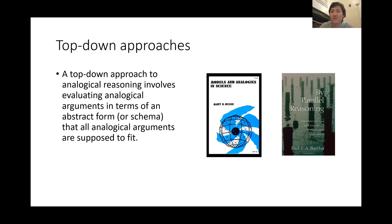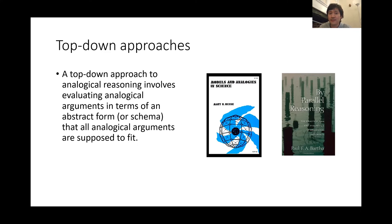Let's start with some traditional philosophical approaches. As mentioned, most philosophical examinations of analogical reasoning start from Mary Hesse's 1963 book, Models and Analogies. Since then, philosophers have returned from time to time to the notion of analogy and analogical reasoning. I found most of them, if not all, can be classified as top-down approaches. Another representative of the top-down approach is Paul Bartha's recent book, published by Oxford University Press in 2010.